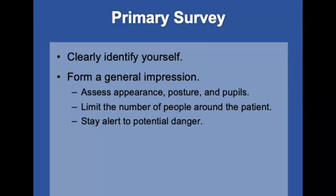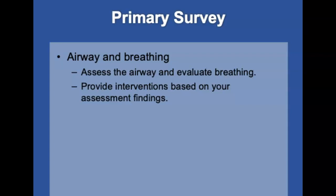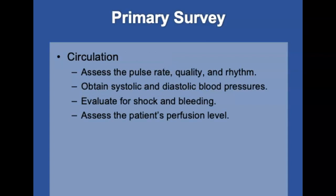In your primary survey, clearly identify yourself and tell the patient who you are and what you're trying to do. Your general impression and how much of the assessment you can perform will be determined by the patient's overall condition and the nature of the psychiatric problem. Tend to priority problems first: airway, breathing, and circulatory concerns. Assess the pulse rate, quality, and rhythm; obtain blood pressures when possible; and evaluate for shock, bleeding, and perfusion level by evaluating skin color, temperature, condition, and cap refill.